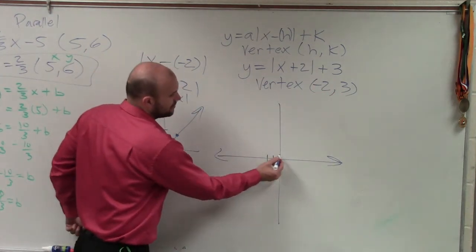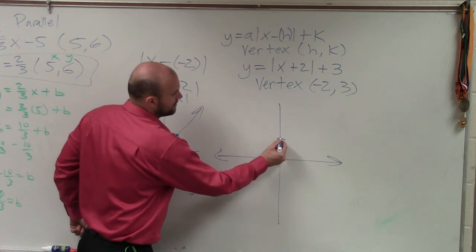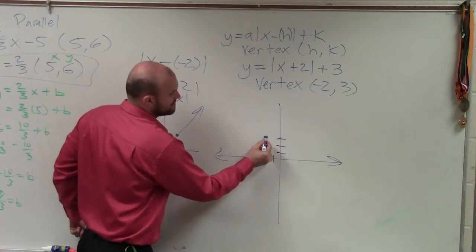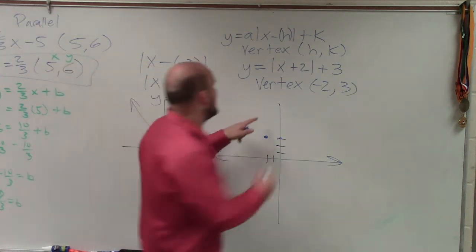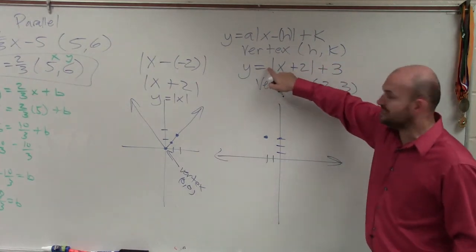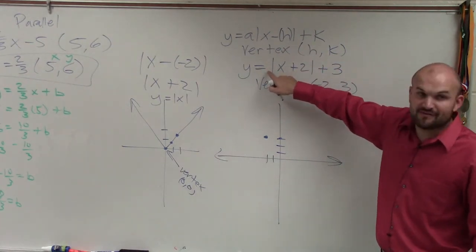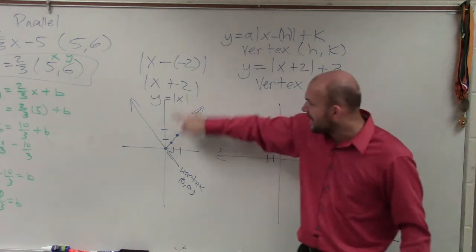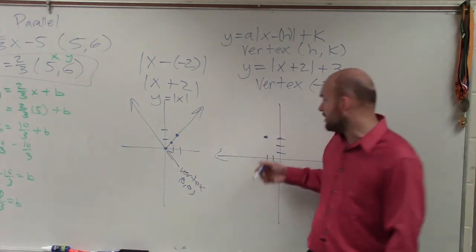1, 2, 3. So now, that's my new vertex. Now, I am not adjusting anything with the slope. I do not have a value of a. So when I do not have a value of a, I can follow the slope of the parent graph.